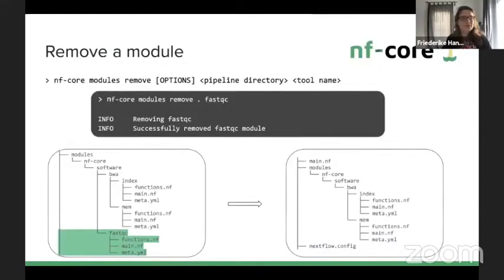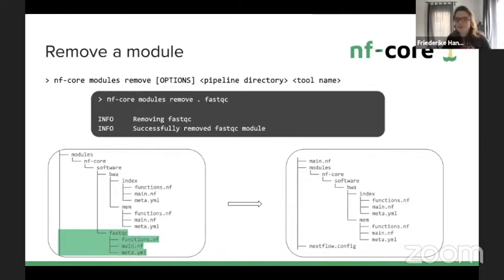The opposing step is how to remove a module you don't want to use anymore or that you erroneously installed. For that you run NF-core modules remove, and it removes the entire subfolder that had FastQC with the functions, main, and meta files in it — and it's gone, with nothing else to do.